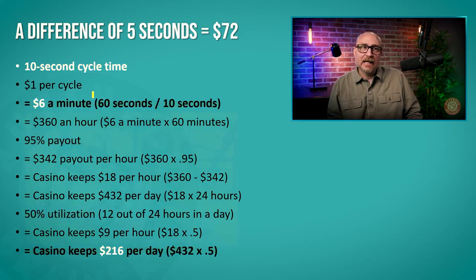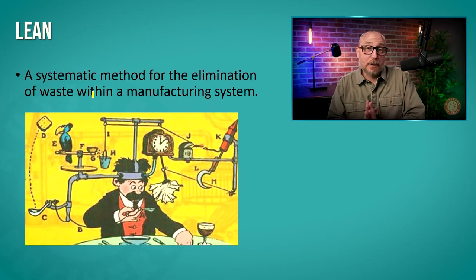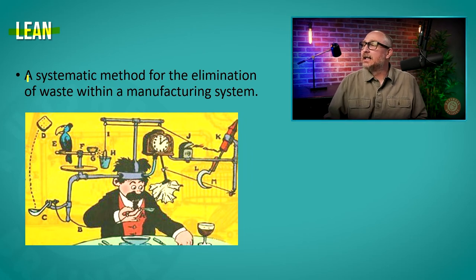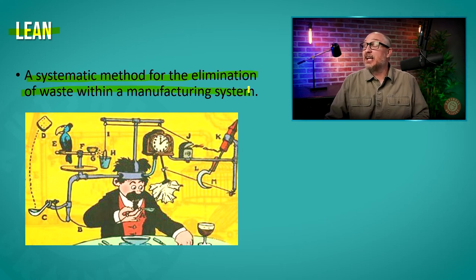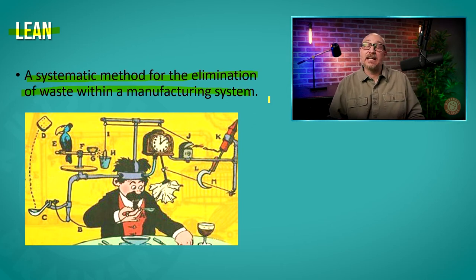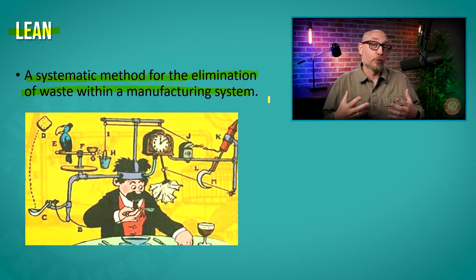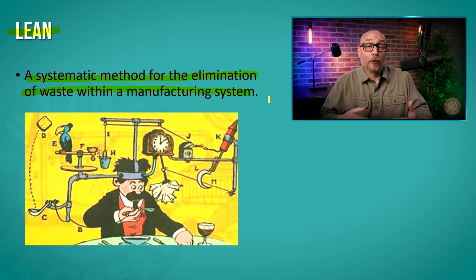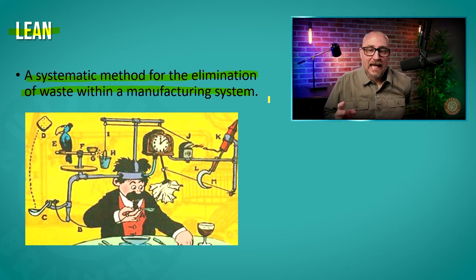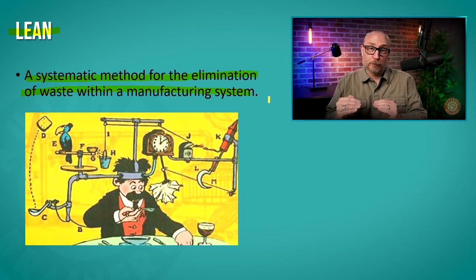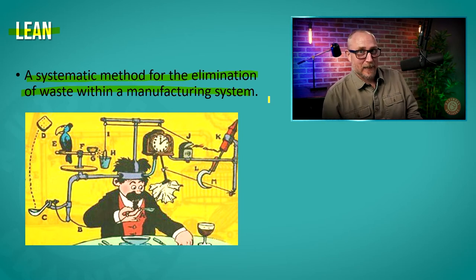Another aspect of Six Sigma is something called lean. Lean is a systematic method for the elimination of waste within a manufacturing system. Every system has waste in it or produces some sort of waste. And the system that can successfully control and reduce the waste produced is the system that makes the most money.